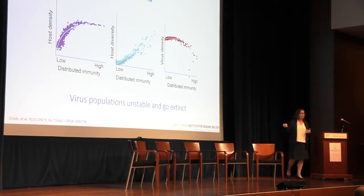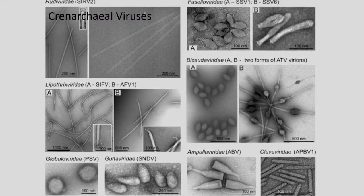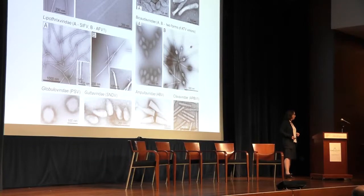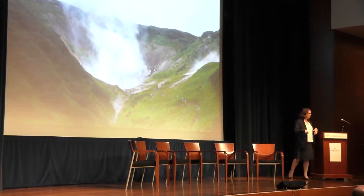We decided to test this model by looking at it in natural populations. The natural population we worked on earlier in my lab was Sulfolobus Icelandicus, which is an archaeon infected by many different viruses. These are beautiful viruses that infect Crenarchaea, and we studied this one because it's dominant in the population we work on. Our host, Sulfolobus Icelandicus, has distributed immunity against this virus. We looked in a single population from the Motnovsky volcano in Kamchatka, Russia, pulled out hundreds of strains of viruses and hosts, compared them to each other, found distributed immunity, and then tested in the lab whether the virus would go extinct.